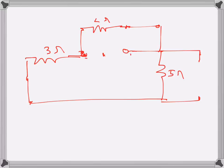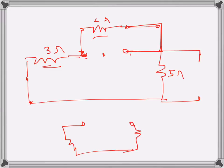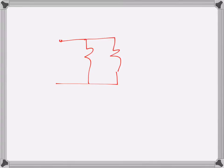Looking at the terminals, we can see that the 2 ohms and 3 ohms are present. If I redraw the circuit, the 3 ohms comes here, then the 5 ohms comes here, and these are the terminals — 5 ohms and 3 ohms there, and another 2 ohms here. So basically we have 3 plus 5 = 8 ohms in series, and that combination is in parallel with 2 ohms.